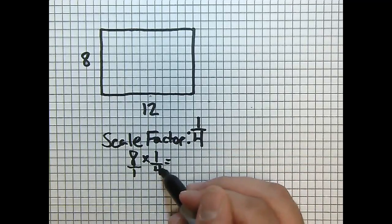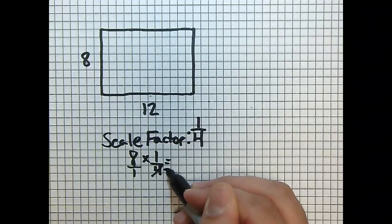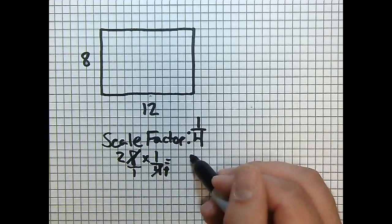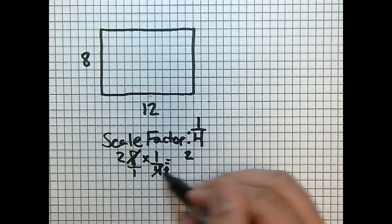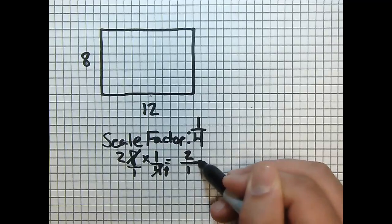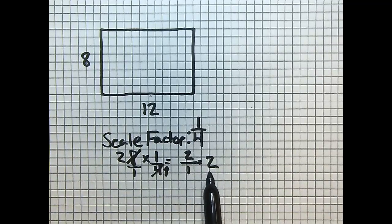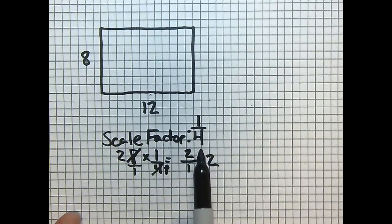We could do some cross canceling. Our 4 will become a 1. Our 8 will become a 2. 2 times 1 is 2. 1 times 1 is 1. So our 8 unit side is now only a 2 unit side when we add a scale factor of 1 fourth.